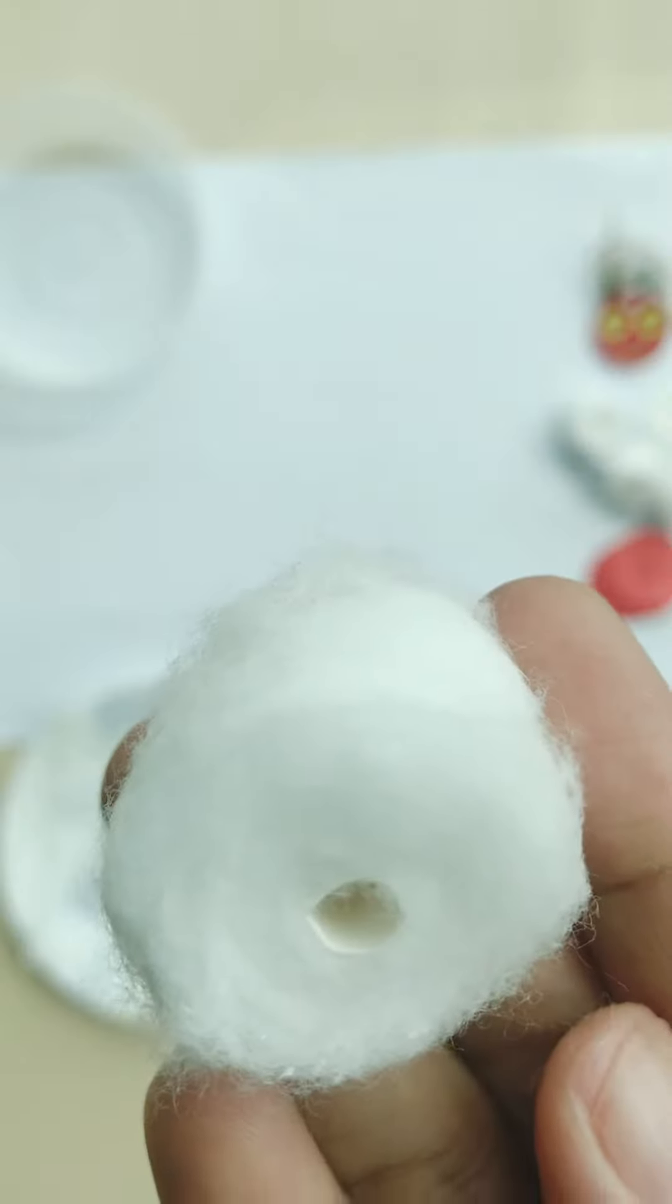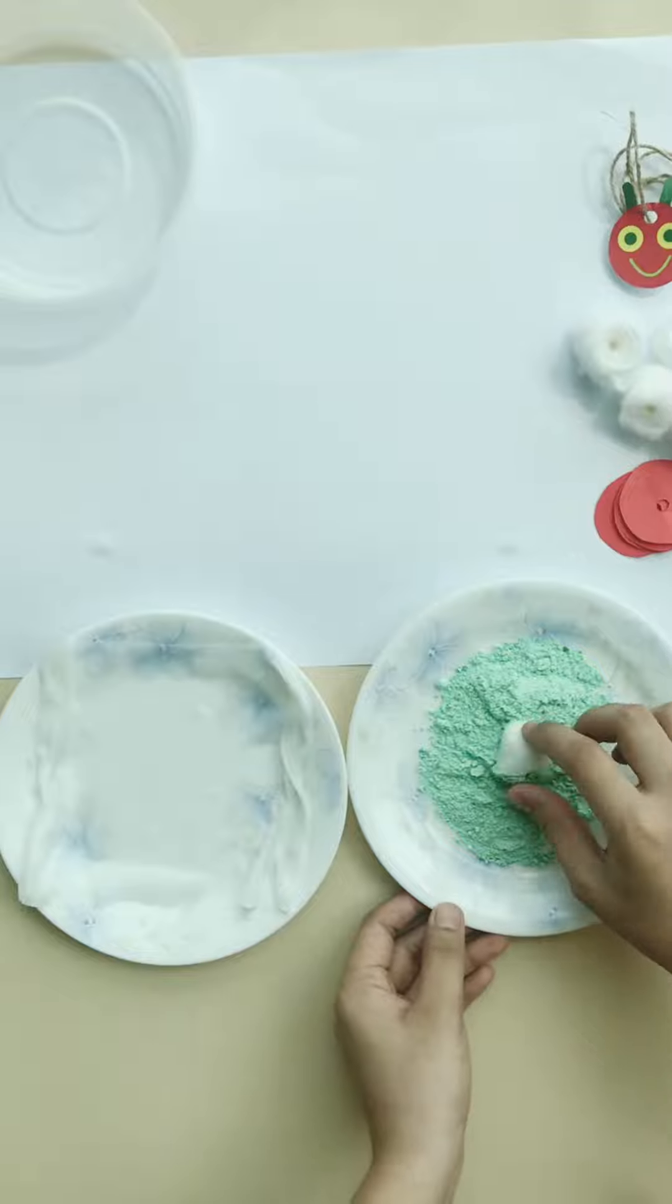Pour the green starch into the bowl. Lightly dab a cotton ball on the wipe. Make sure the surface is damp, not soaked.